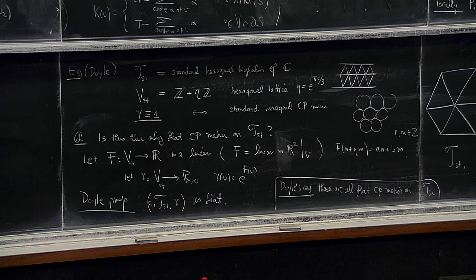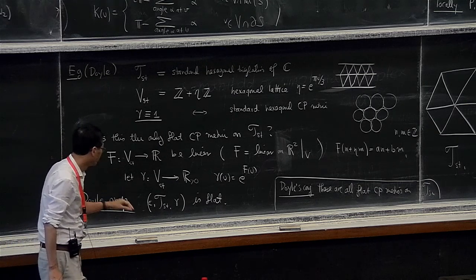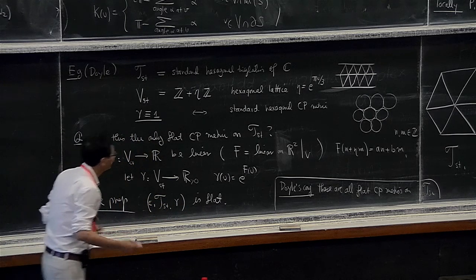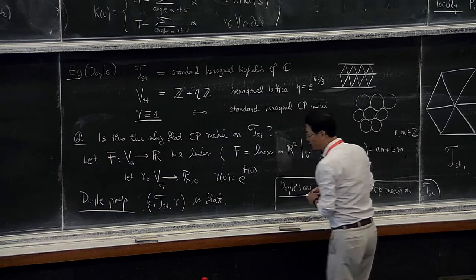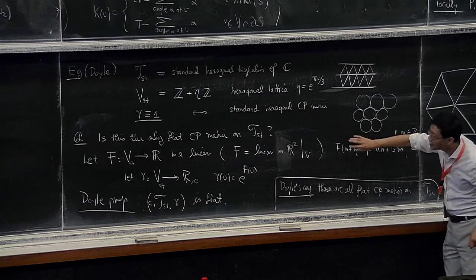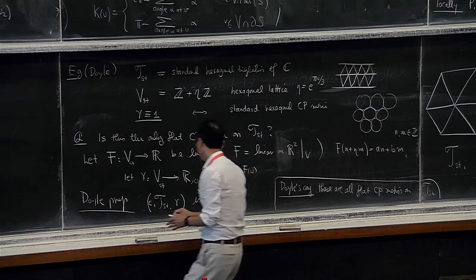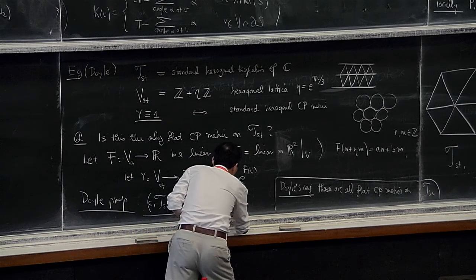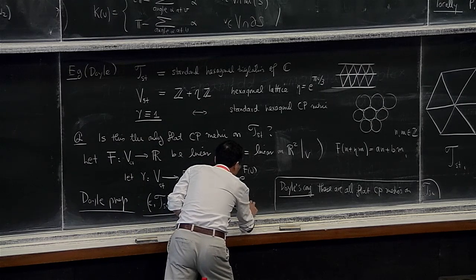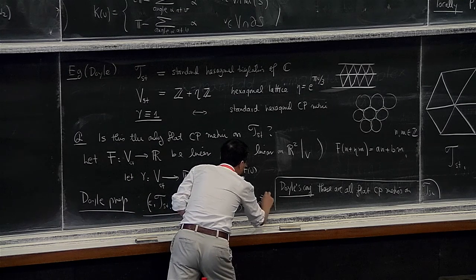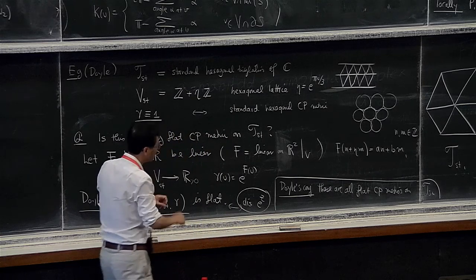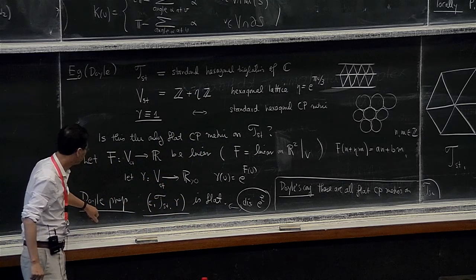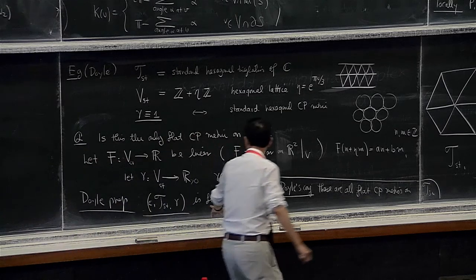Let me verify for you that this is, in fact, flat. The calculation is really simple and elegant. We want to verify that these circle packing metrics are flat. These functions are really the discrete exponential functions — a discrete e^z. You see the spiral pictures, and that's why the name.